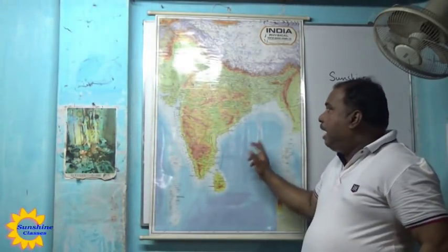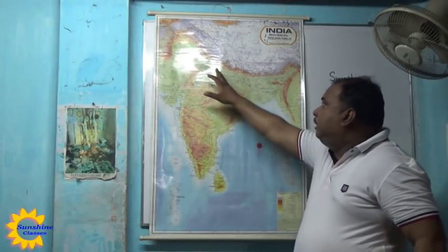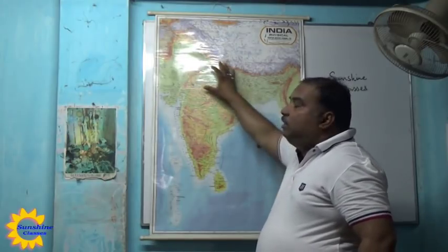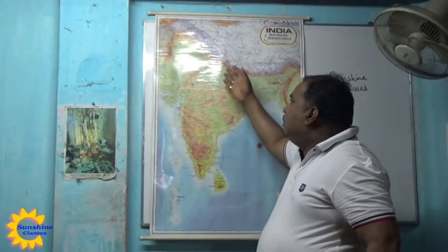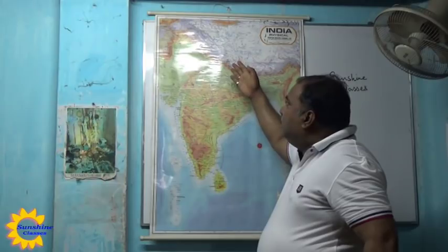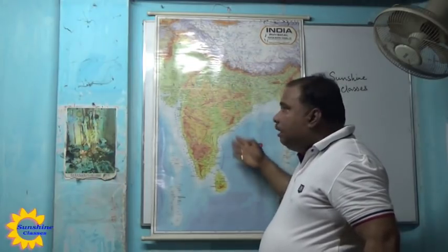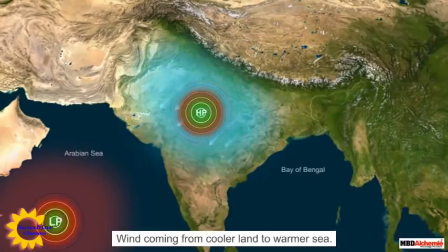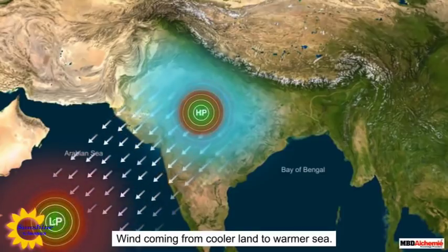The northeast monsoon wind blows in winter season. During summer, the southwest monsoon blows from water to landmass, but the northeast monsoon will occur during winter. During the months of November and December there will be winter in the northern part of India, so air will blow from the landmass to the water body. This is known as northeast monsoon.